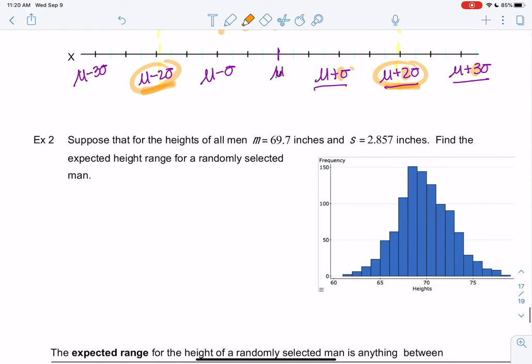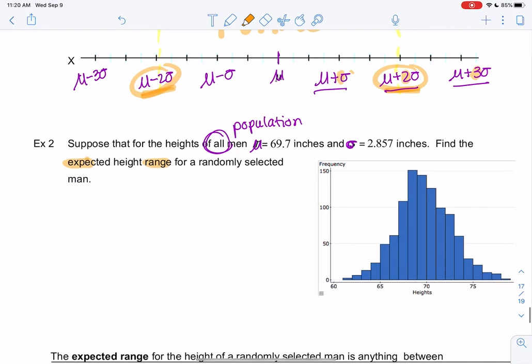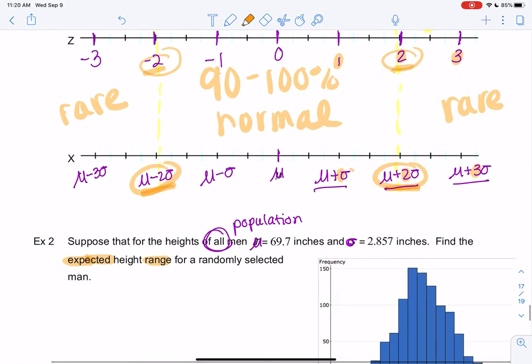Suppose the heights for all men has an average of 69.7 inches—I used μ because it's a population—and a standard deviation of 2.857 inches. We want to find the expected height range. So this is not range, this is expected range. This is a new definition that I actually told you in the last video.